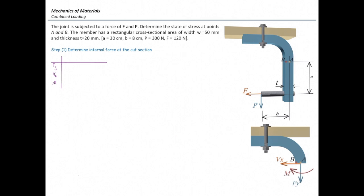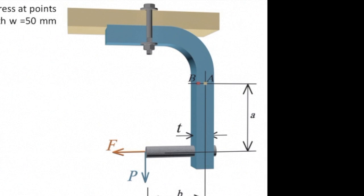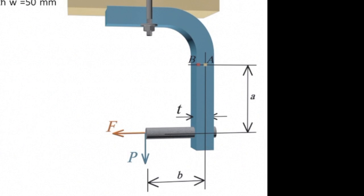At the cut section, there will be three forces: Fy, Vx, and M. I will move all forces one by one to that cut section. Let's move force P — there should be two moves. The first move is in the horizontal direction, and the second move is in the vertical direction. When I move force P in the horizontal direction, there will be a moment. The magnitude of that moment is the force times the arm — the distance of this force from this axis — which is B. So the moment is P times B.